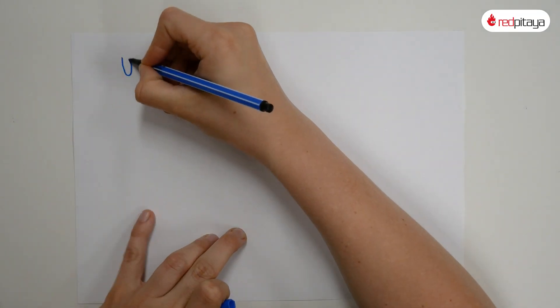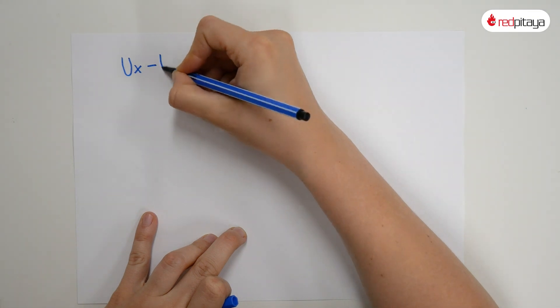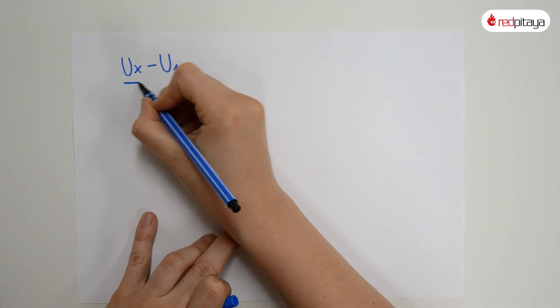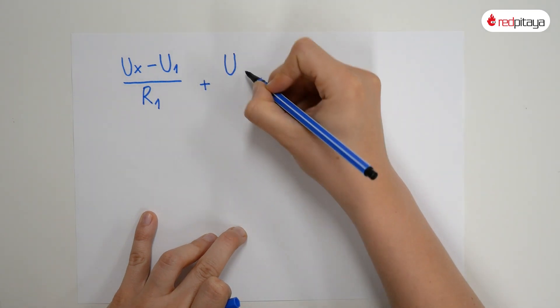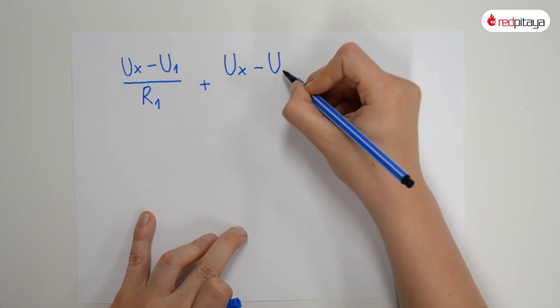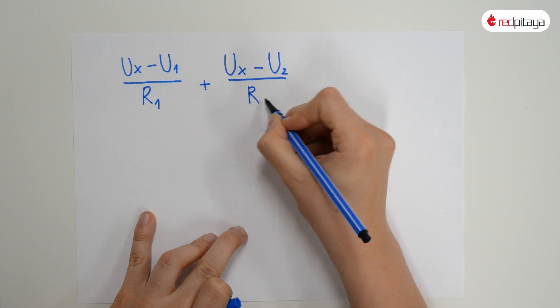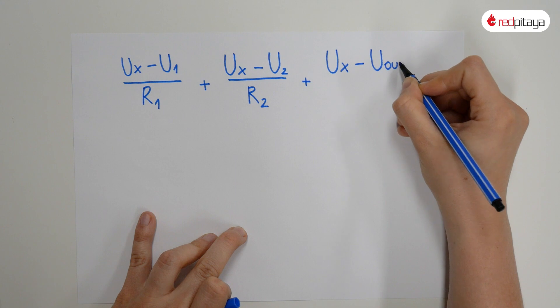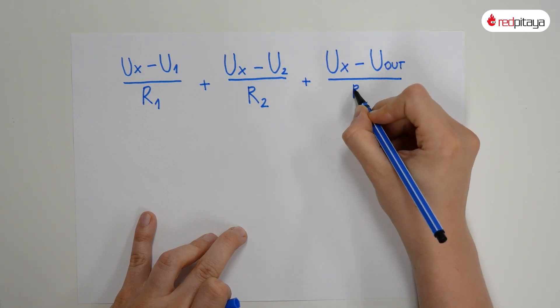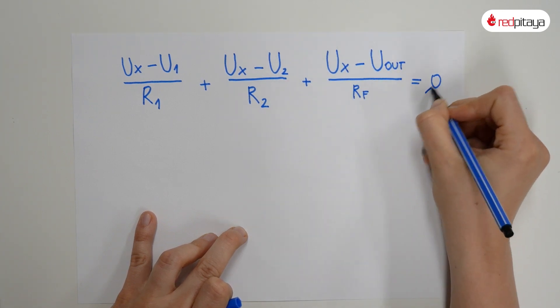An explanation of why this works would be in order. Let's take a look at the schematic and write down some equations. Let me remind you of Kirchhoff's current law. All currents entering a node must also exit it. Applying that in inverting input nodes, let's mark it with an X, we get...